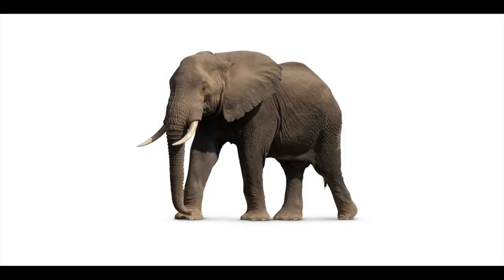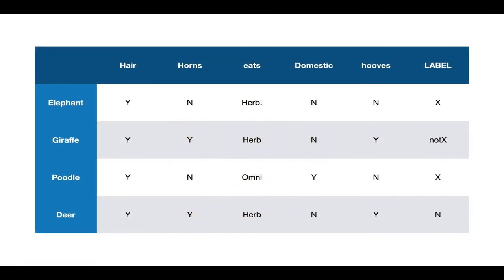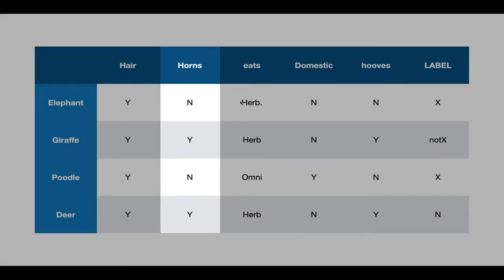If you figured it out earlier, the question would be, how did you do it? What was the technique you used? You probably looked at this elephant and tried to think of all the possible features that it had. The elephant has hair, doesn't have horns, it's herbivore, wild animal, not domestic, doesn't have hooves. You're building this along trying to come up with what column in this table gives it away, and we found out it was the horns column. Every time it said no, they're an X.